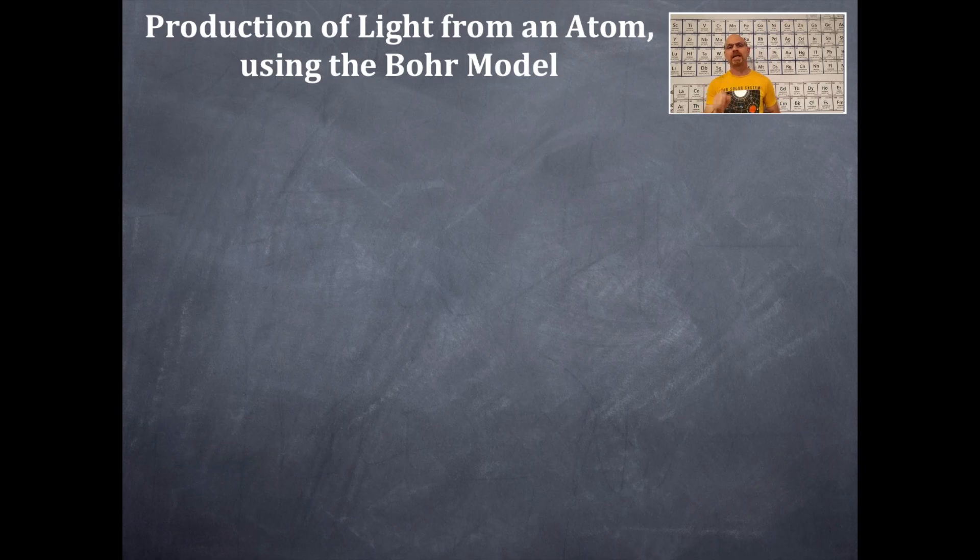So, production of light from an atom. We're going to be using the Bohr model of the atom here. We're going to be talking about the Bohr model in another video, but this is using the Bohr model. So, let's build our atom first and then we can find out how light is produced from an atom.